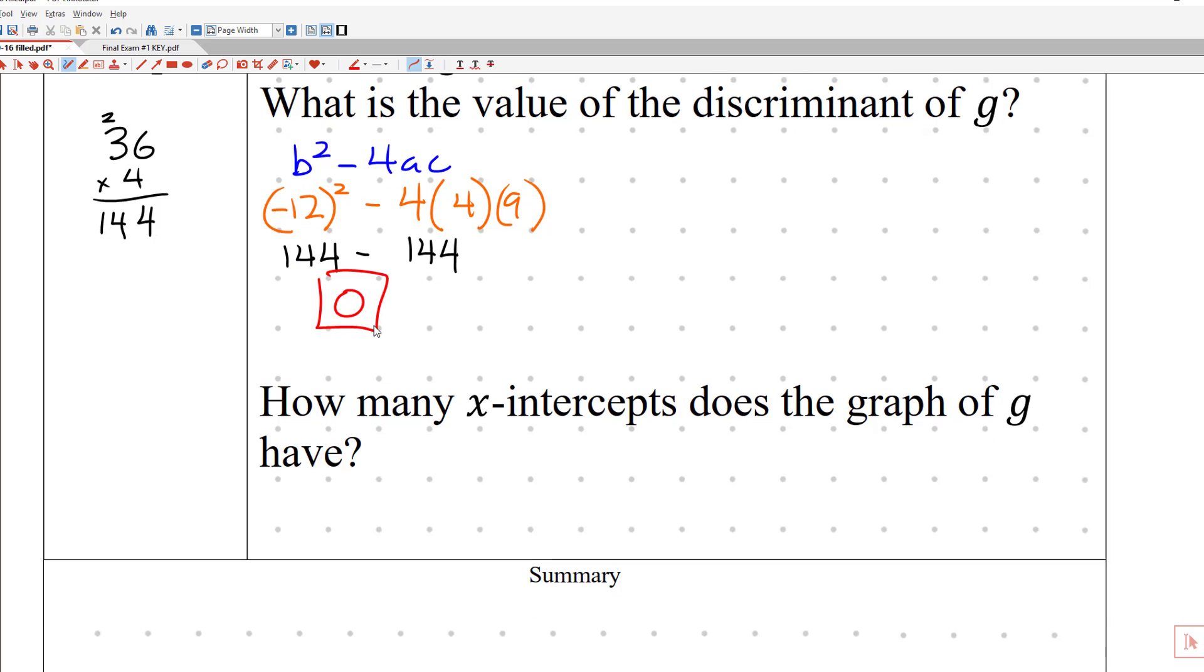So the discriminant is zero. And we know when the discriminant is zero, that means we have one x-intercept. And why? It's because the discriminant is zero. You don't have to write this in Khan Academy, but I just want to explain where I'm coming from in my notes. Discriminant is zero.